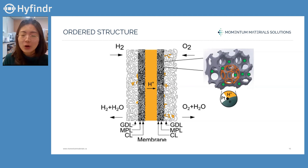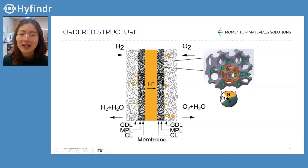Our main goal is to build an ordered structured membrane electrode assembly using our materials. Ordered structure will also increase the controllability and reproducibility in manufacturing procedures. In the long term, that controllability in manufacturing will also help decrease capital cost when manufacturing the ordered structured membrane electrode assembly. So the catalyst layer — the dark shaded part shown here — will have that ordered structure.